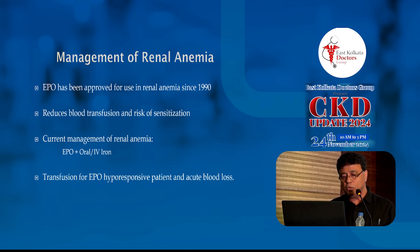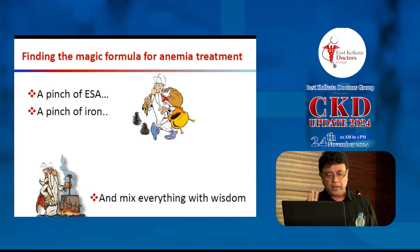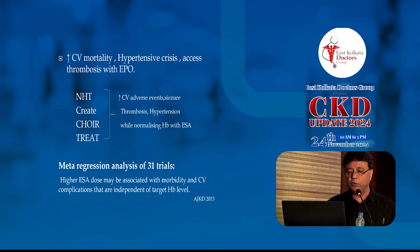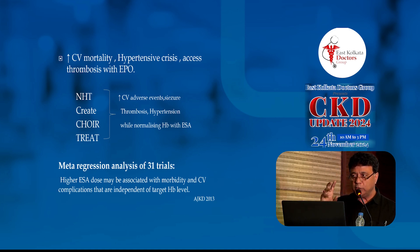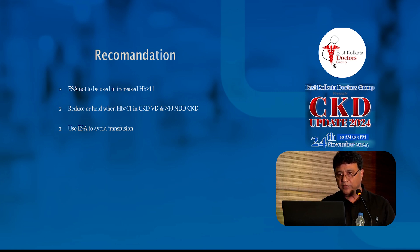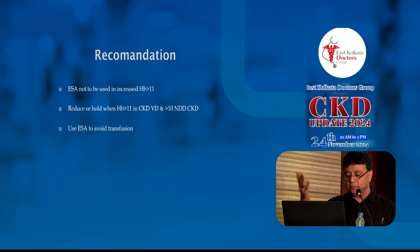Current management of renal anemia is erythropoietin-stimulating agents plus iron, with transfusion reserved for ESA hyporesponsive patients and acute blood loss. However, the normal hematocrit trial, CHOIR trial, CREATE trial, and TREAT trial found increased cardiovascular adverse events, seizure, thrombosis, and hypertension when trying to normalize hemoglobin with ESA. Specifically, hyporesponsive patients did badly, and higher ESA doses may be associated with morbidity and cardiovascular complications independent of the target hemoglobin. The recommendation came: don't use ESA to increase hemoglobin above 11 g/dL - use ESA to avoid transfusion only. ESA received a black box warning from the FDA.